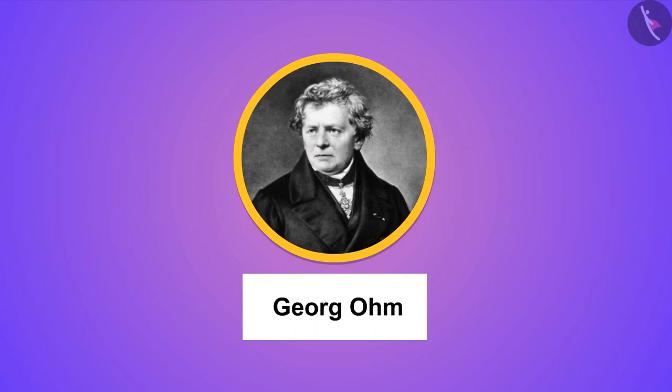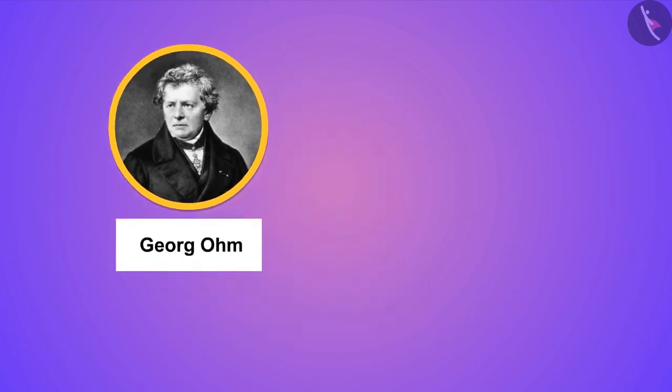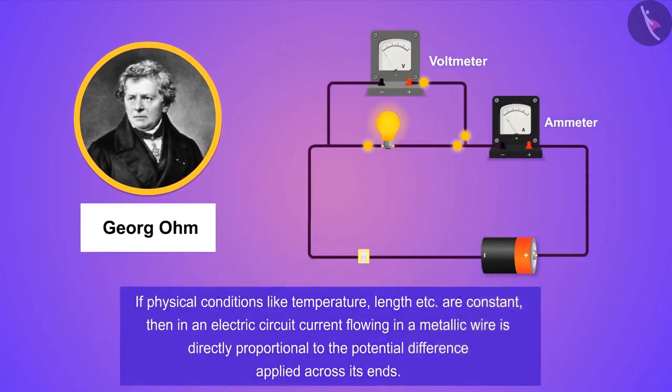Ohm states that if physical conditions such as temperature, length, etc. are constant, then in an electric circuit, the electric current flowing in a metallic wire is directly proportional to the potential difference applied across its ends.